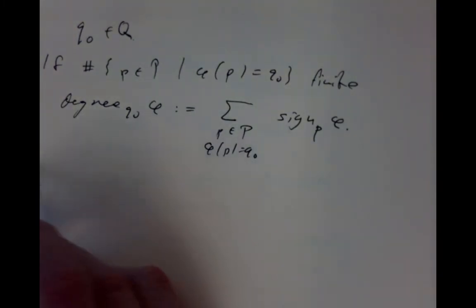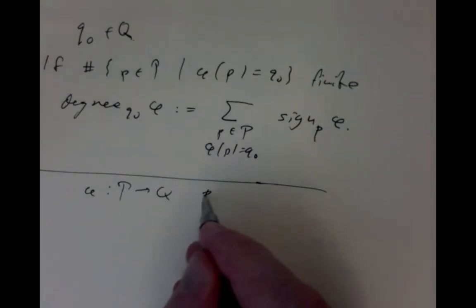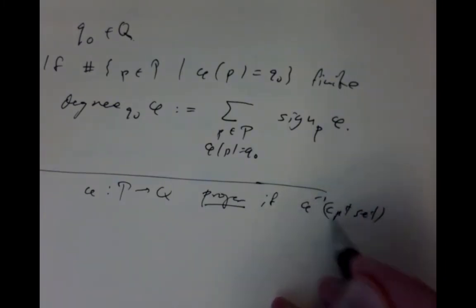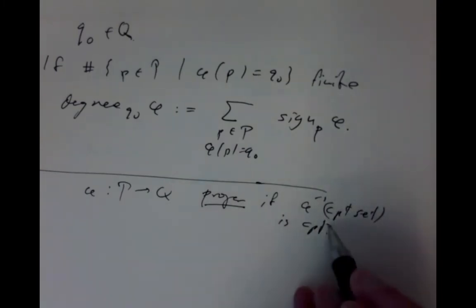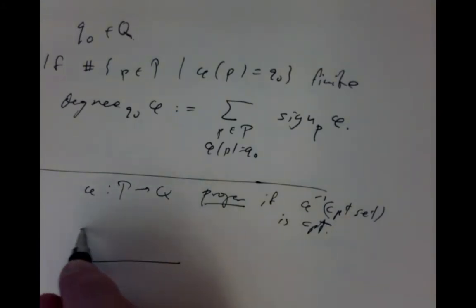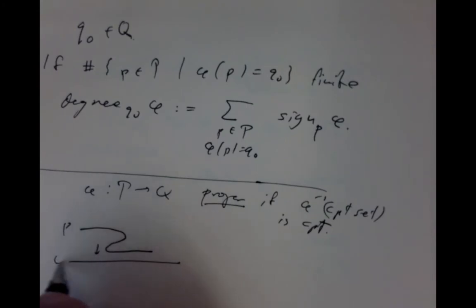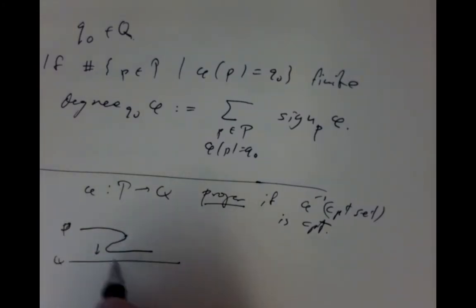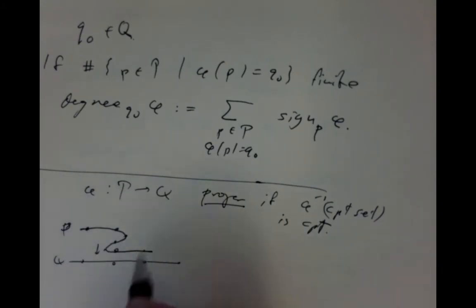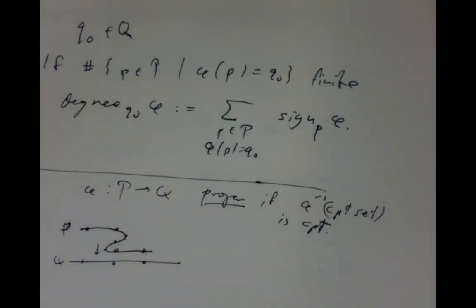A map φ: P → Q is said to be proper if the preimage of any compact set is compact. In general that's not always the case — for example, constant maps on a non-compact P are not proper. But it's not unusual when P and Q have the same dimension. For instance, a shadow-type map from one curve to another can be proper, with most points having only finitely many preimages.